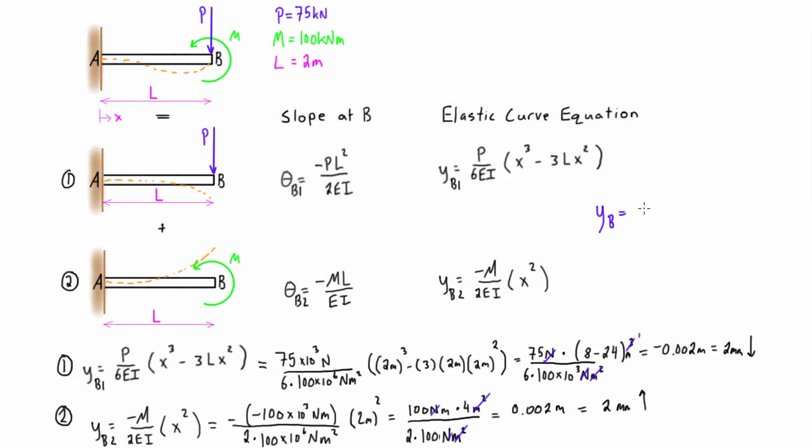So y_B is going to be equal to y_B1 plus y_B2, and that's obviously going to equal negative two millimeters plus two millimeters, so we're getting y_B here is equal to zero.